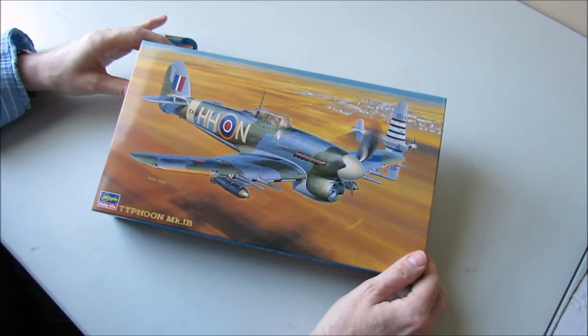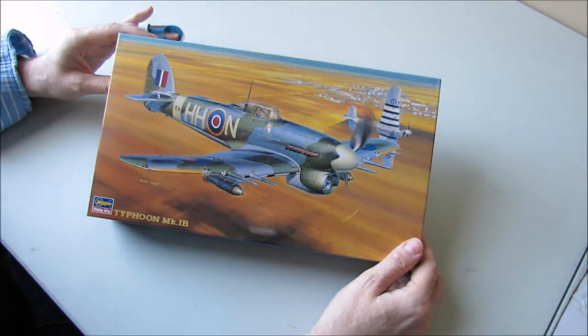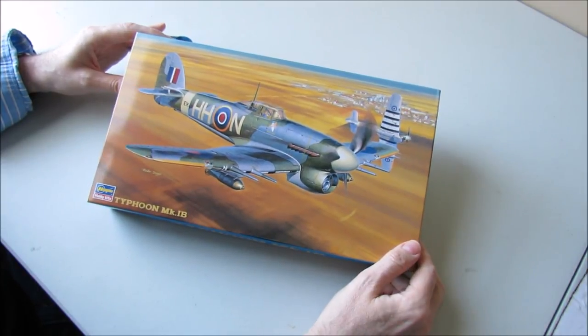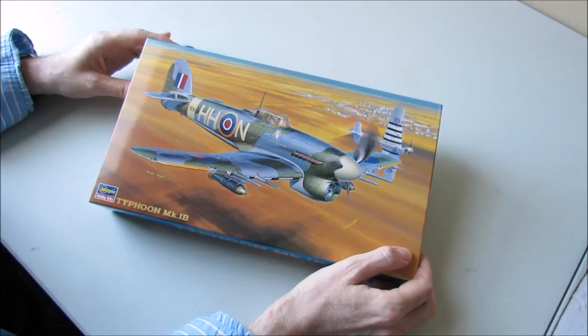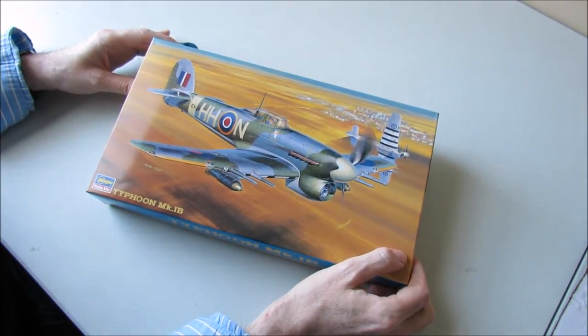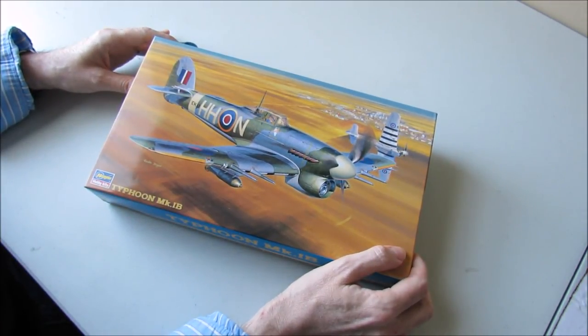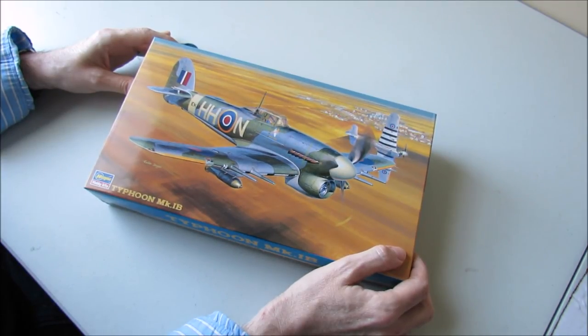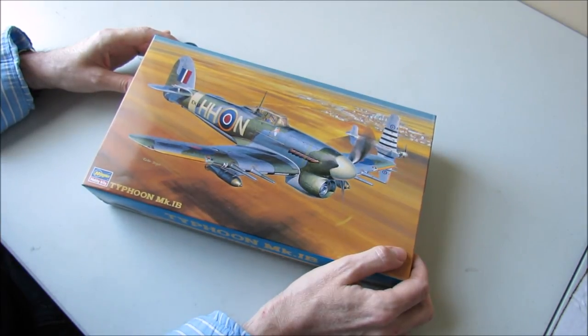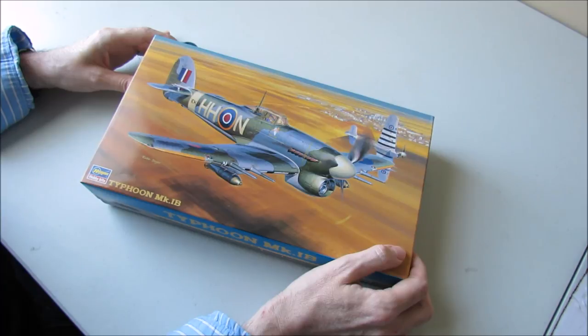It's the Hasegawa Hawker Typhoon Mark 1B with the cockpit door style, not the bubble top. So this is the one I'm going to enter for the International Scale Modellers D-Day group build. Let's take the lid off and see what we've got inside.